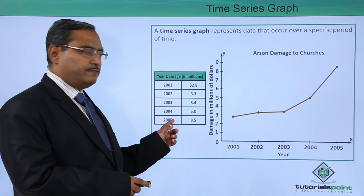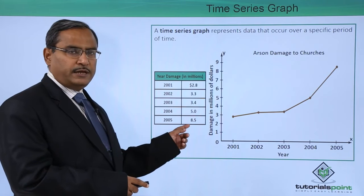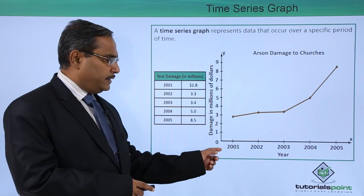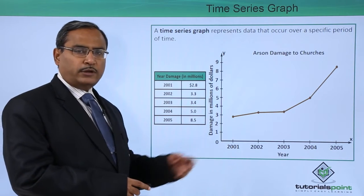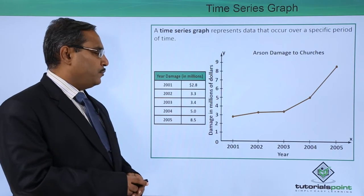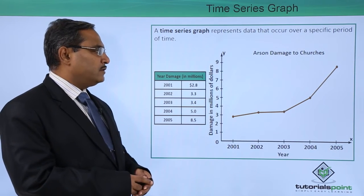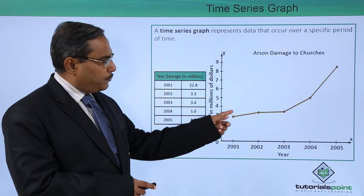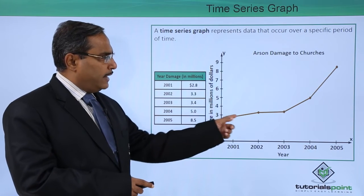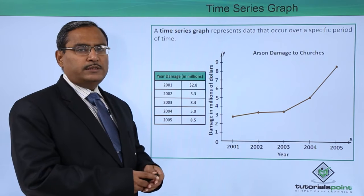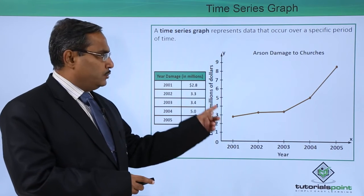2001 to 2005, the respective values are given in USD. Here you can find that along the x-axis we are plotting the years, along the y-axis we are plotting the damage in millions of dollars, and here we are plotting the respective points and then connecting it with some line graph.